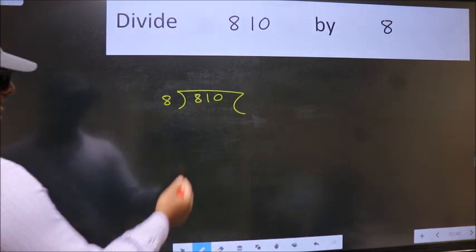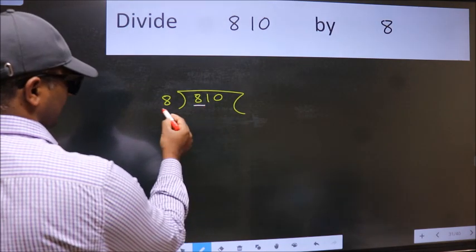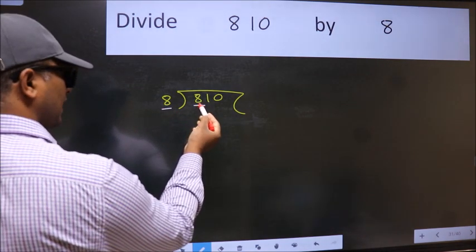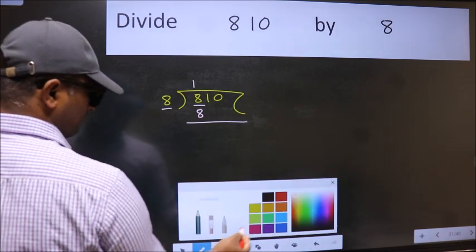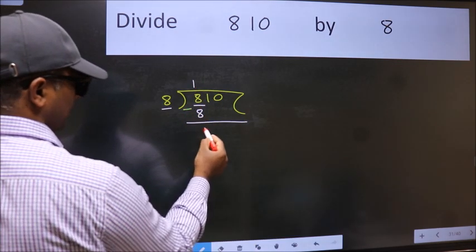Next. Here we have 8 and here 8. When do we get 8 in the 8 table? 8 once 8. Now we should subtract. We get 0.